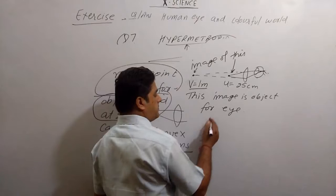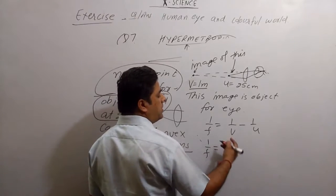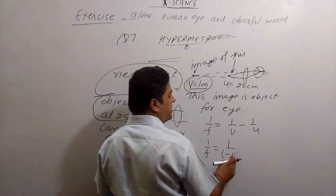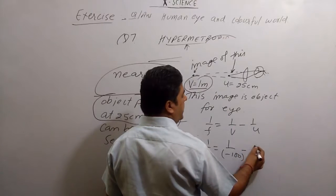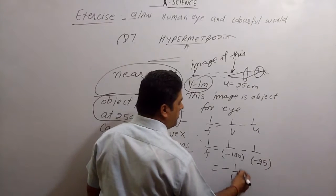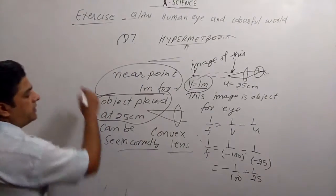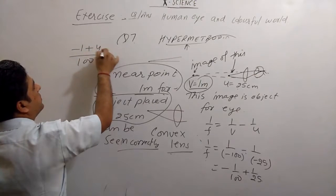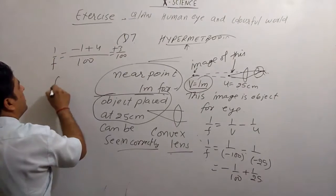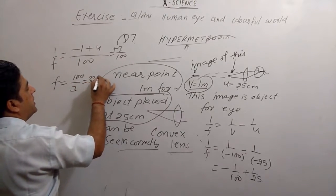Put the formula, 1 upon f is equal to 1 upon v minus 1 upon u. We need to find out the focal length. V, what I told you, minus 1 meter, means 100 centimeter, minus u, 25, solve, minus 100, minus minus, plus 25, take the LCM, come here, take the LCM, it is 100, minus 1 plus 4, it is nothing but plus 3 by 100, 1 by f, what is f? 100 by 3, it is 33.3 centimeter.